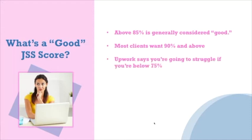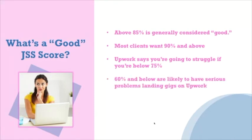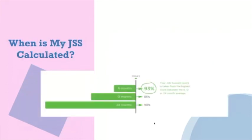Upwork's guidance says you'll have a hard time if you're below 75, and below 60 it's really hard to land jobs — a 50% score is like a coin toss on whether you can finish the job. These are general guidelines. Strive for 85 and above, but if you're at 75 right now it's not the end of the world. We'll want to work on your marketing strategy to land more gigs, get better feedback, and build that Job Success Score back up.